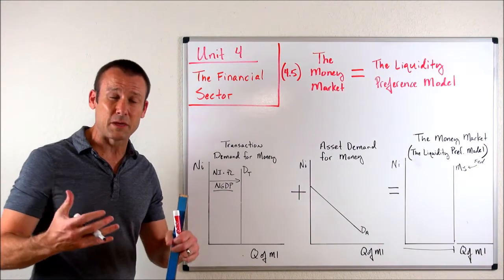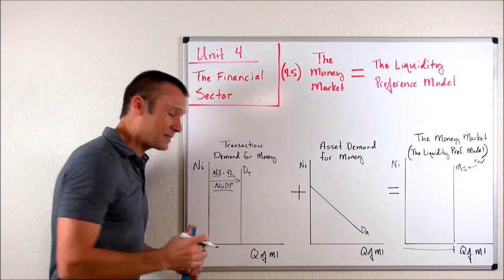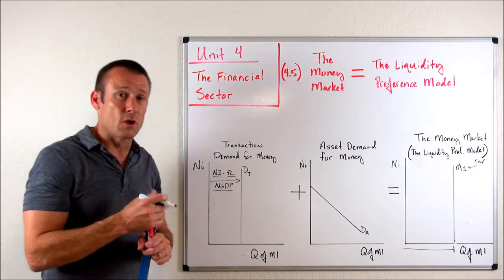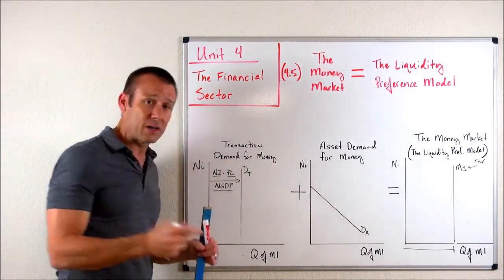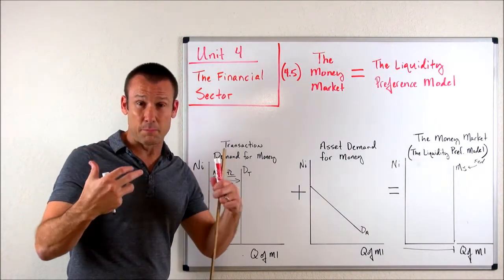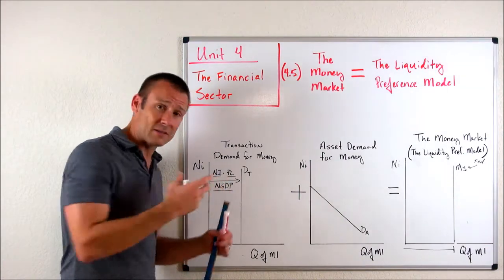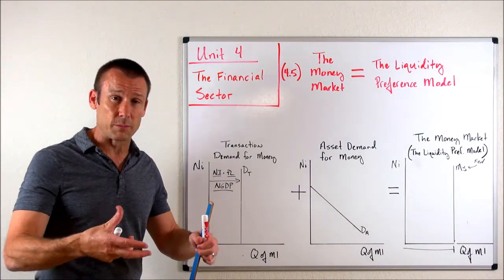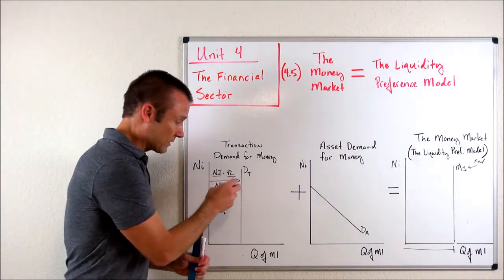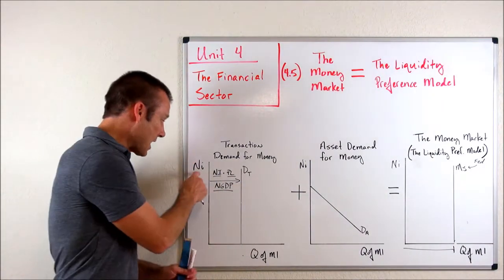I think it's better to think of it as national income and the price level rather than nominal GDP, because that sticks better with students. Bringing it down to the individual level: what determines an individual's transaction demand for money? Their income would be one thing — they'll set up a life with a certain number of basic transactions based on their income. The prices of what they buy also determine their transaction demand for money. Aggregating all individuals together, national income and price level — not the nominal interest rate — determines this amount of our demand for money.